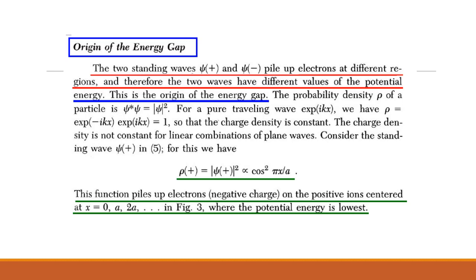The probability density and hence charge density is constant in the case of free electron, where rho equals psi star psi, which equals e to the power i k x into e to the power minus i k x, which is 1. But for psi plus wave, this charge density is proportional to cos square pi x by a. This function piles up electrons at positive ion cores. Similarly, for the psi minus wave function, the probability density is proportional to sin square pi x by a, which concentrates electrons away from the ion cores.